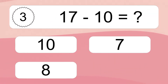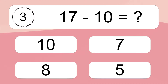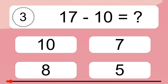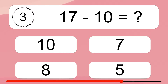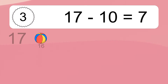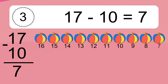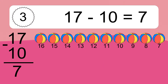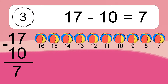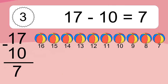17 minus 10 equals what? 17 minus 10 equals 7. Let's count it! 16, 15, 14, 13, 12, 11, 10, 9, 8, 7.